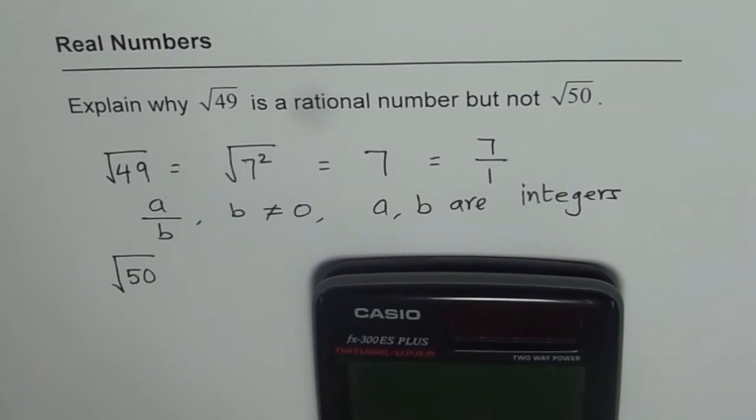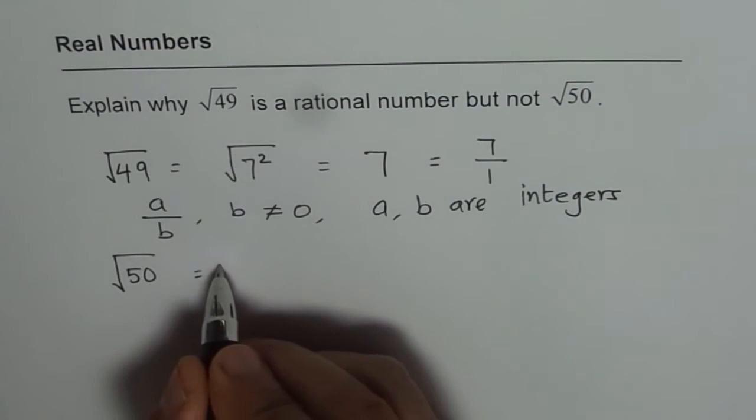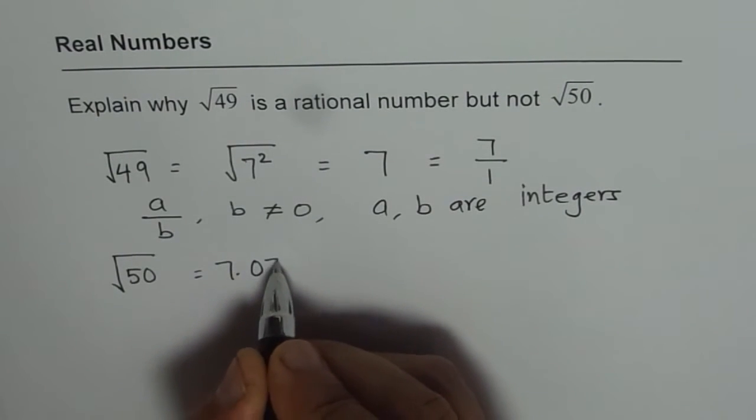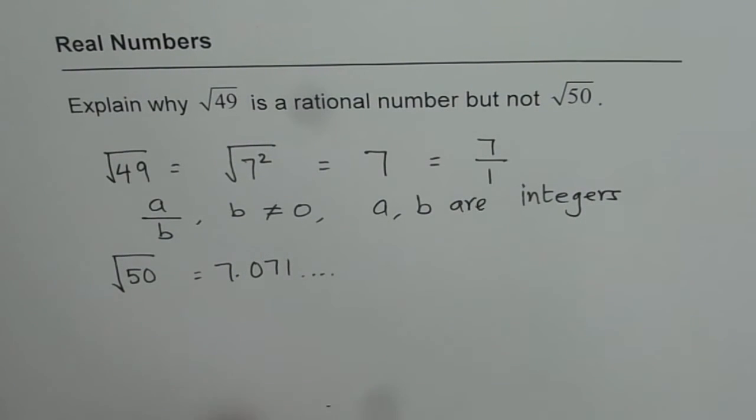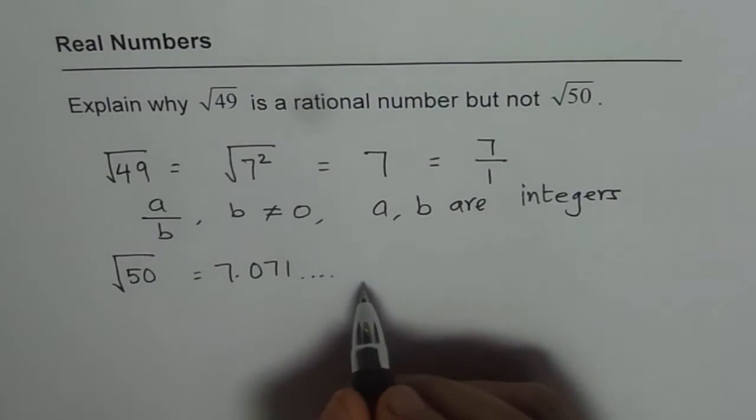Square root of 50, for example, gives 7.071 something. But these decimals do not repeat. Since the decimals do not repeat, we cannot write this as a fraction.